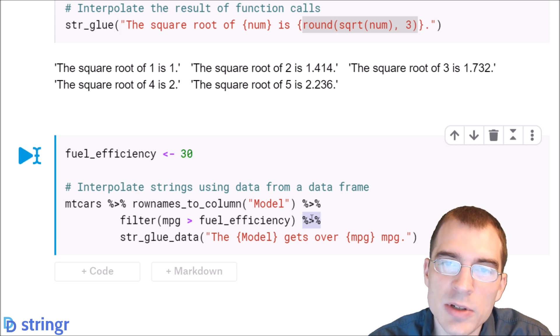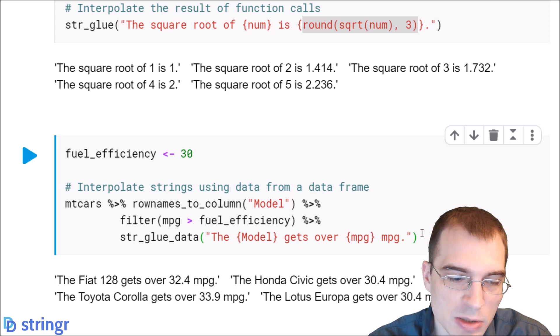Finally, we're going to pipe that resulting data frame to str_glue_data. And then we can construct a string extracting values from this data frame. We're going to construct a string from each of the records here, extracting the model, which we saved in this column, as well as the mpg, which is already in the mtcars data set. So this will create a different string telling us in a string sentence what the mpg was for each of these models that gets good gas mileage. So let's just run this and see what the results are.